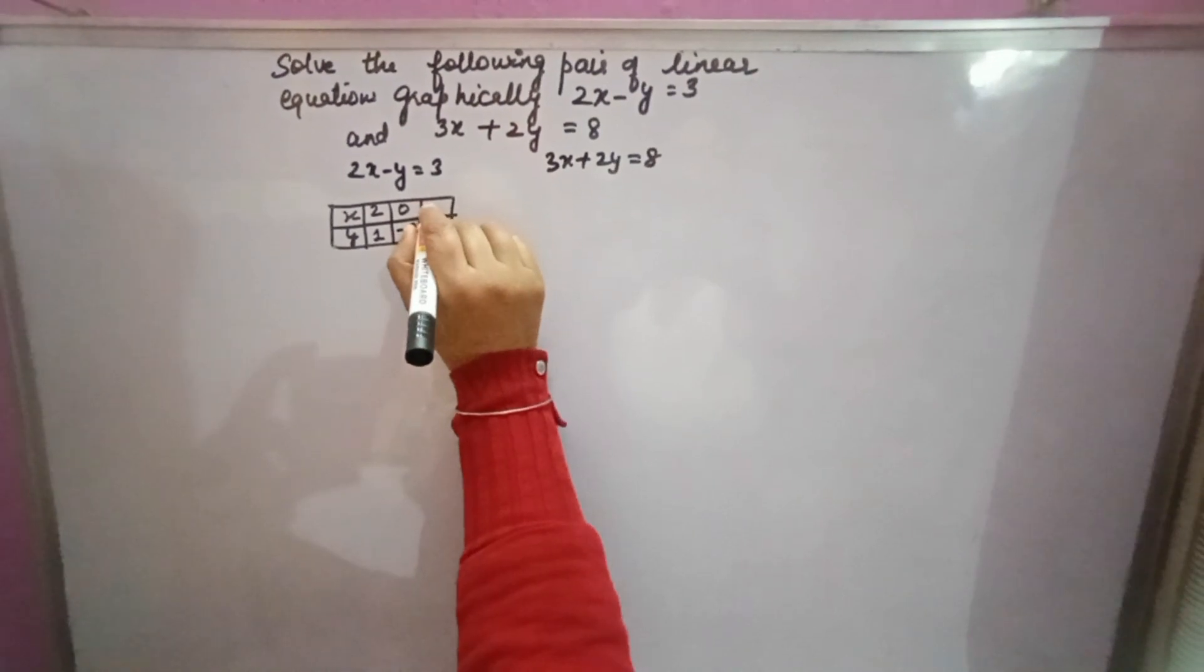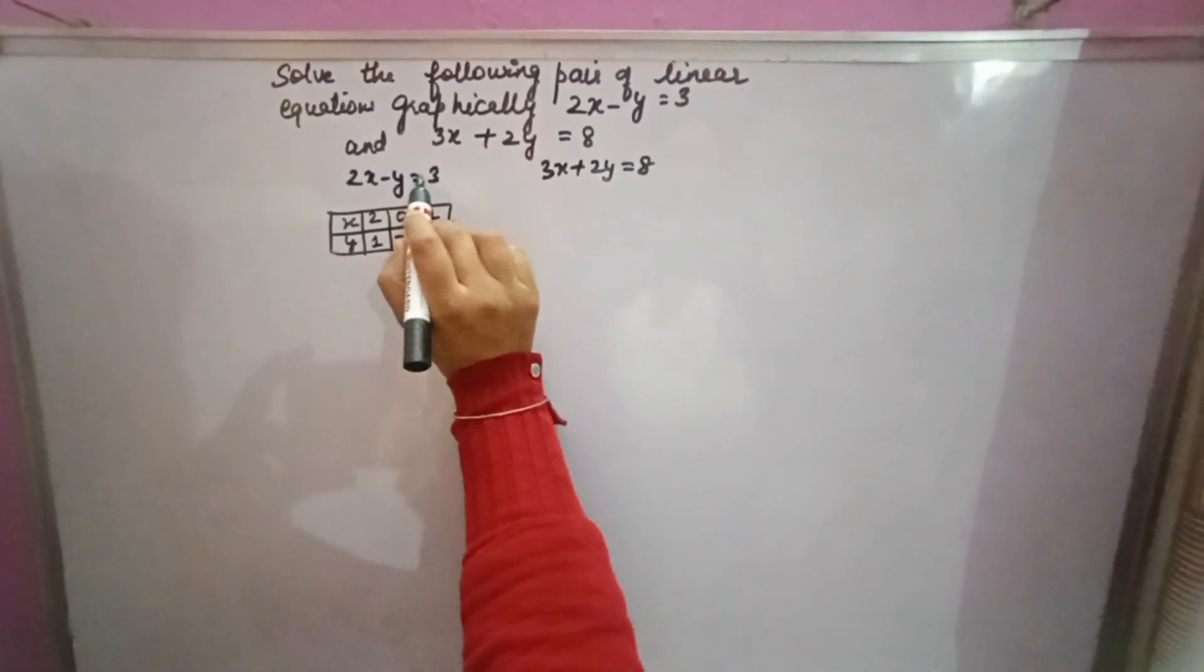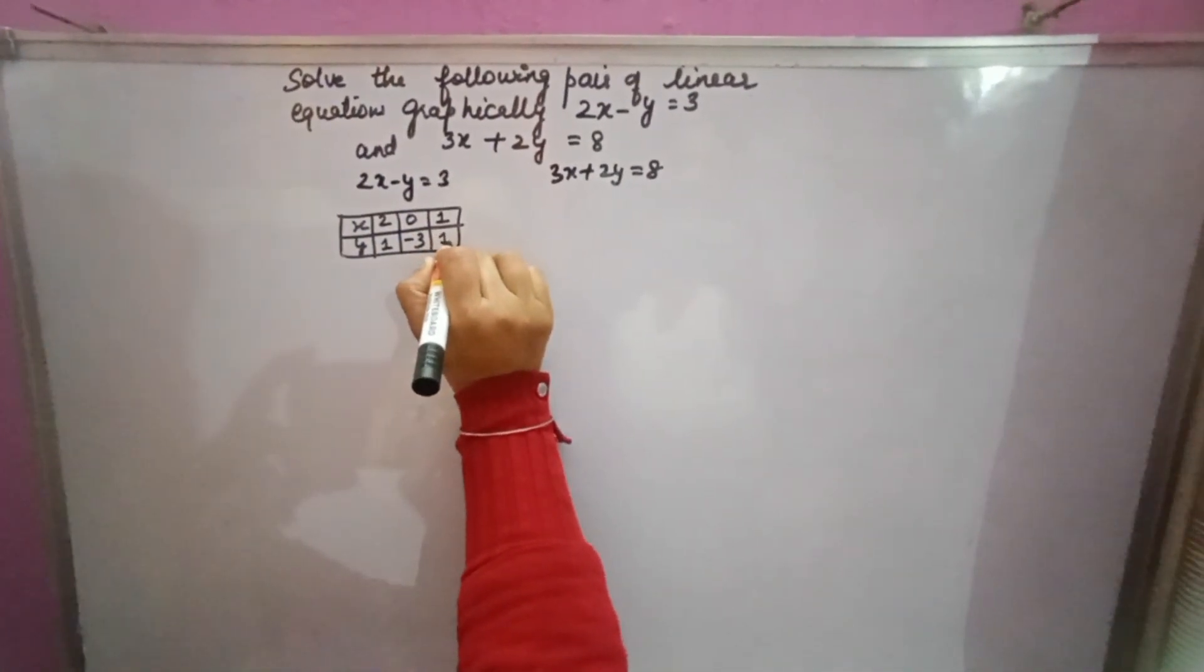y will come equal to minus 3. Suppose x you are taking 1. x is 1, 2 times 1 is 2. Minus y equals 3 minus 2, that is 1. So the y value will also come minus 1.